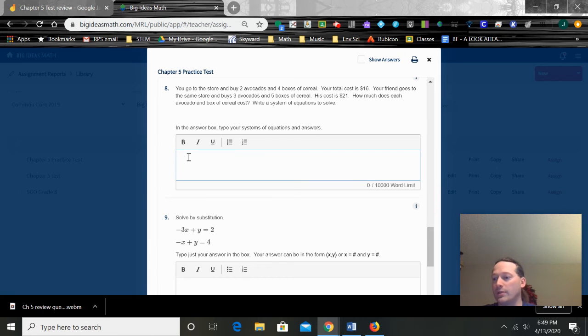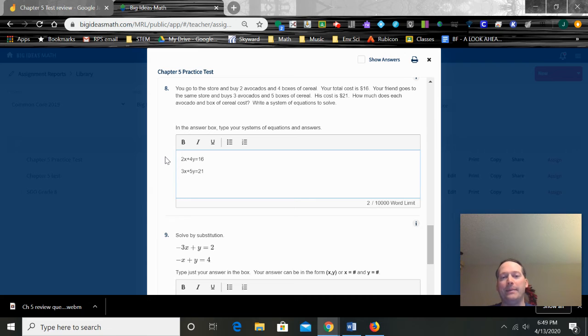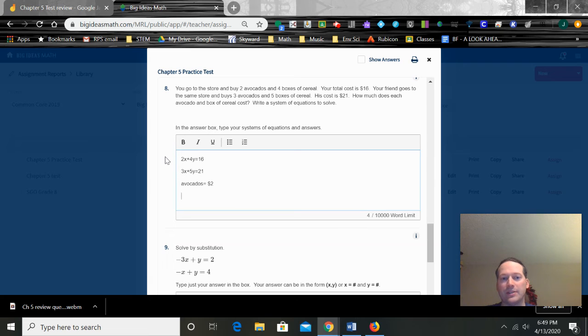So now how do you actually put this equation into the answer? Well, the first thing it says, type your system of equations. So what's the equations that we had? It is two x plus four y equals 16. That was the first equation that we used. The second equation that we used is three x plus five y, and that equals 21. And we came out with an answer. An x equal to, but x stood for something. X stood for avocado. So the avocado cost $2 each. And y was the box of cereal. So the cereal cost $3 each. So that would be the acceptable way to write the answer for number eight.